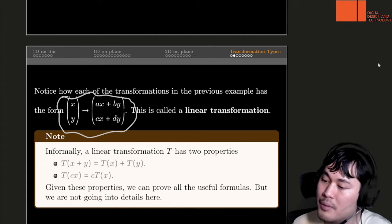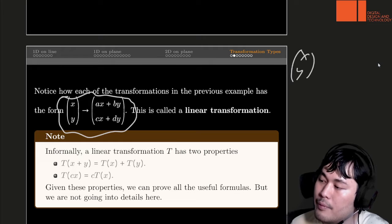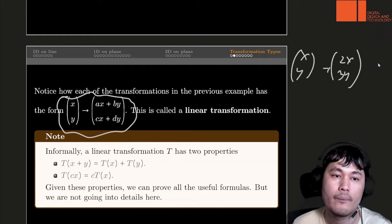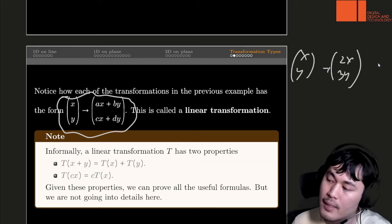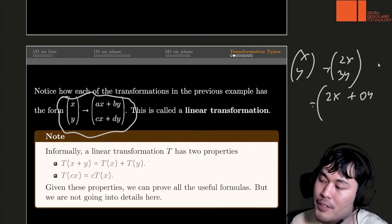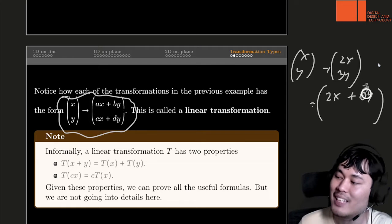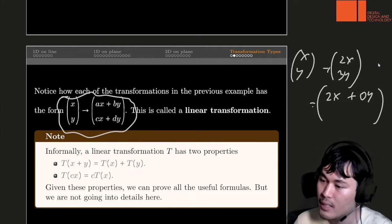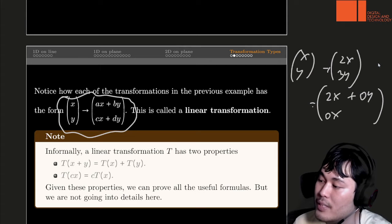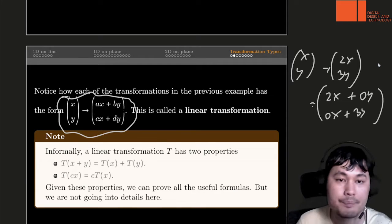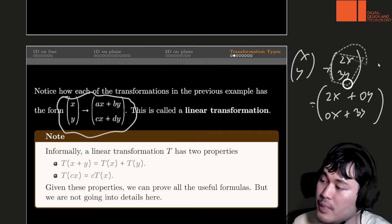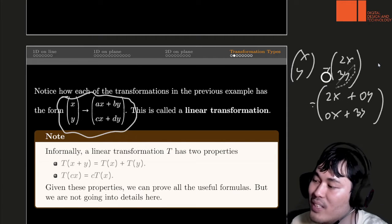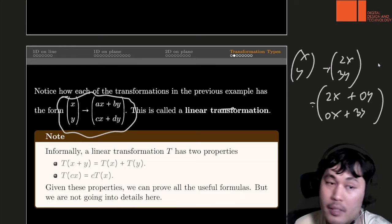And these numbers or these multipliers can be anything. For instance, if you map xy to 2x and 3y, it's still in this form, except that we have like 2x plus 0 times y. We can let any of these numbers be 0. And likewise, we have 0 times x plus 3 times y. So this basic one of the dilation or scaling or skewing is in this form.